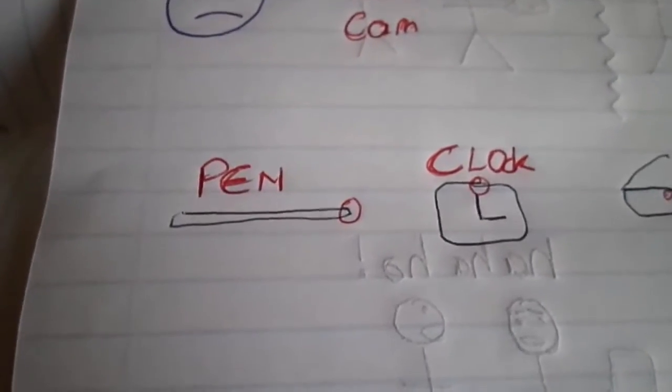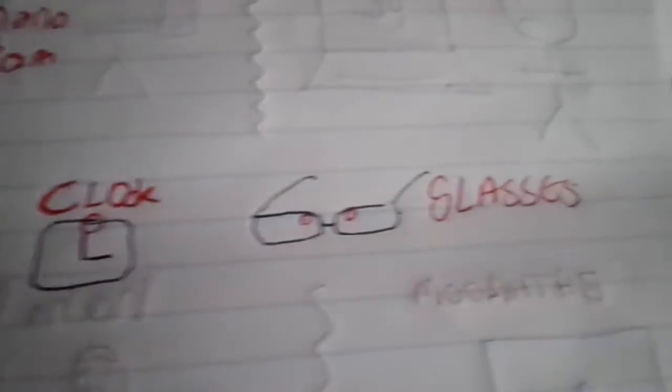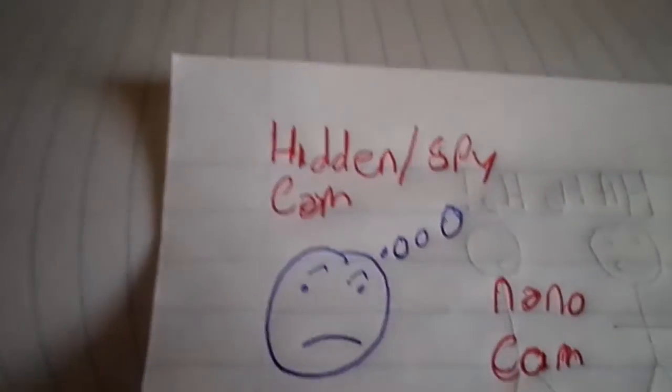We all know of pens and clocks and glasses that can have super small cameras to spy, but you're definitely convinced that there must be more to it than just that.